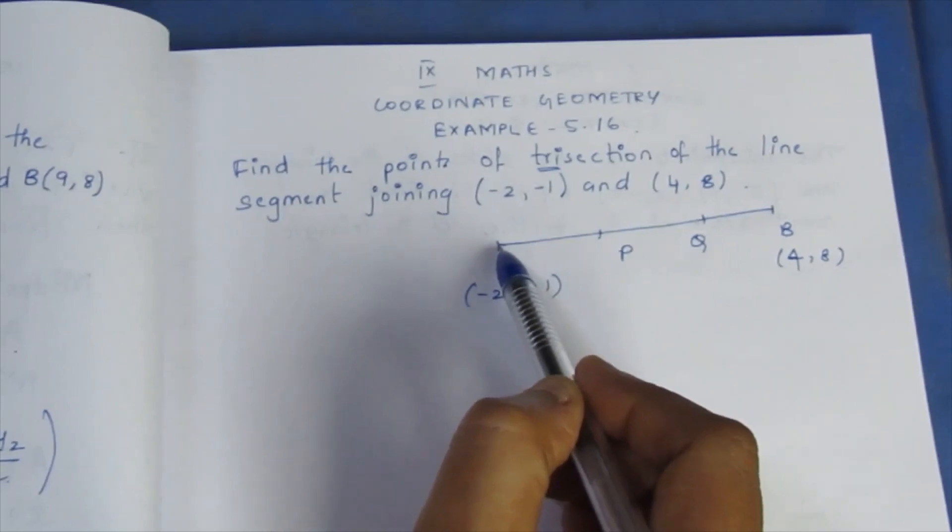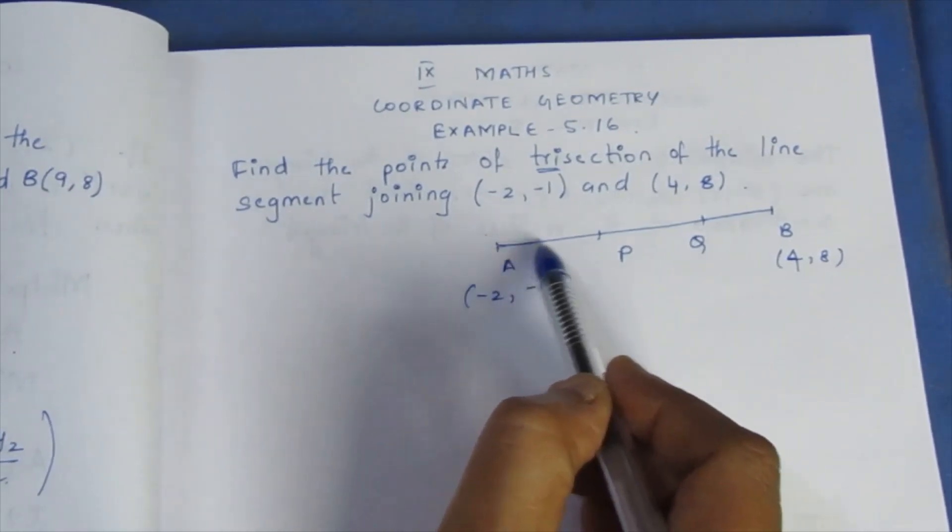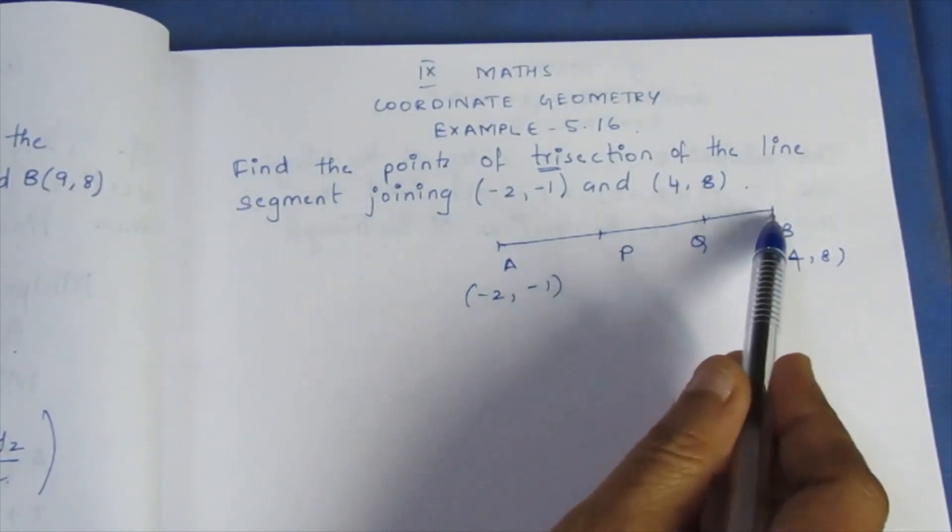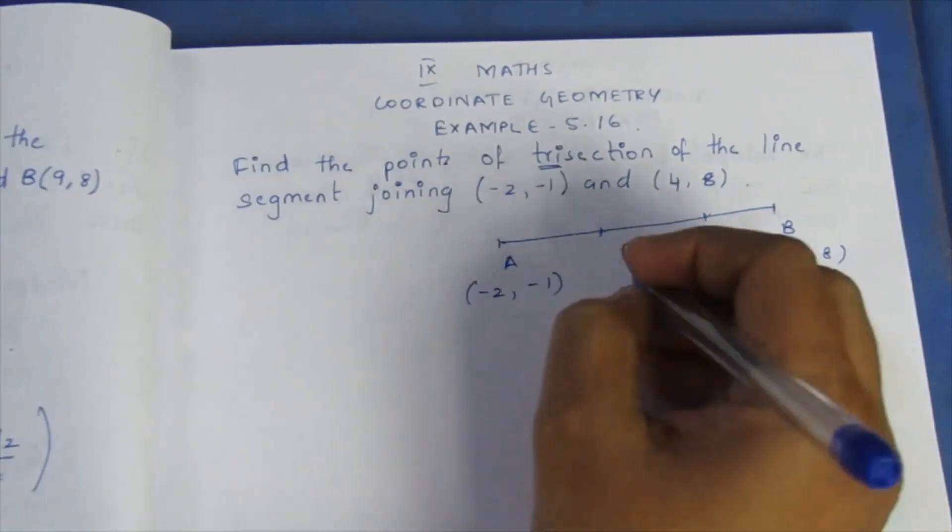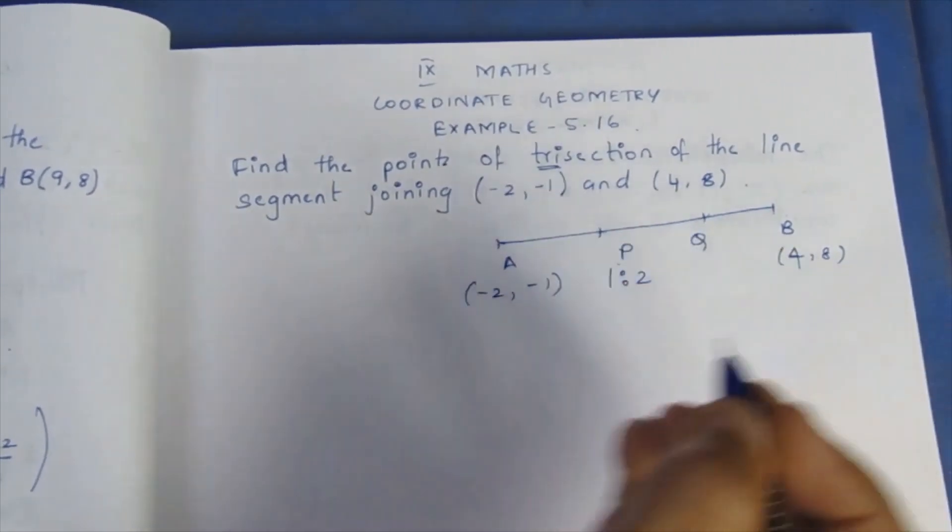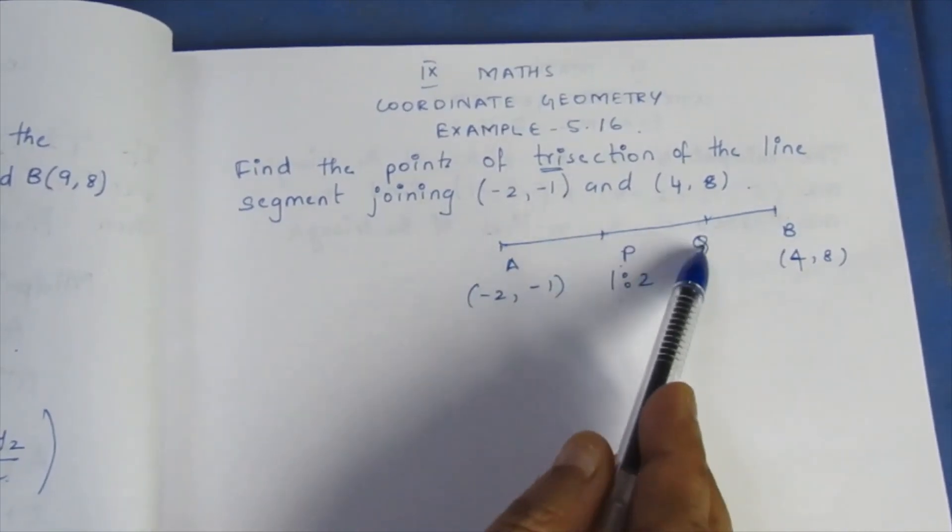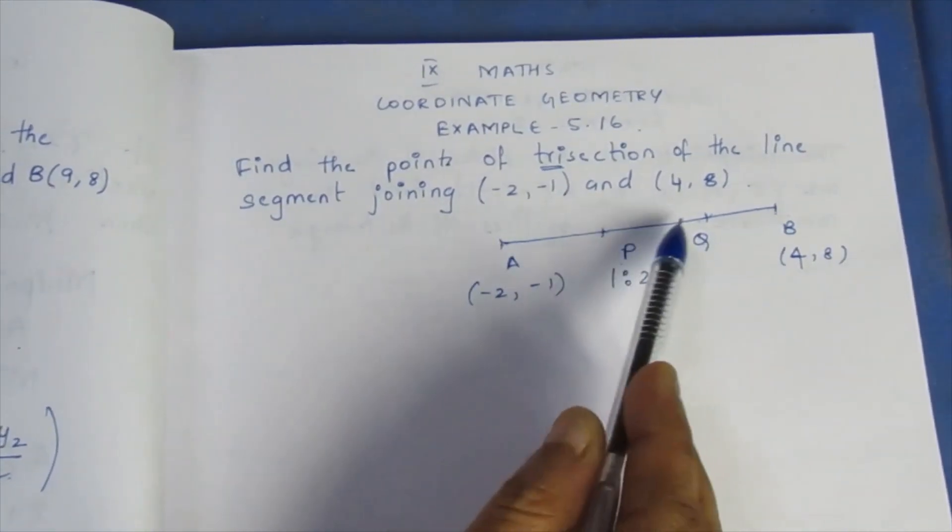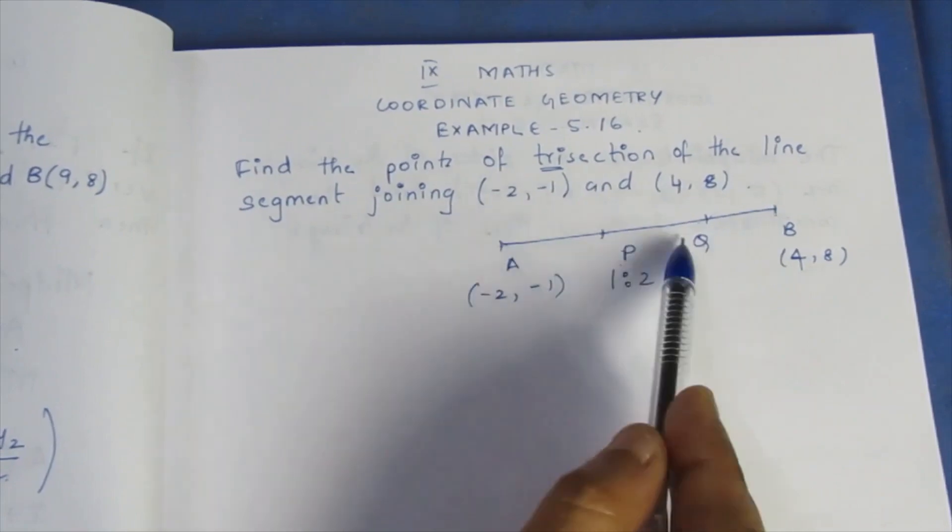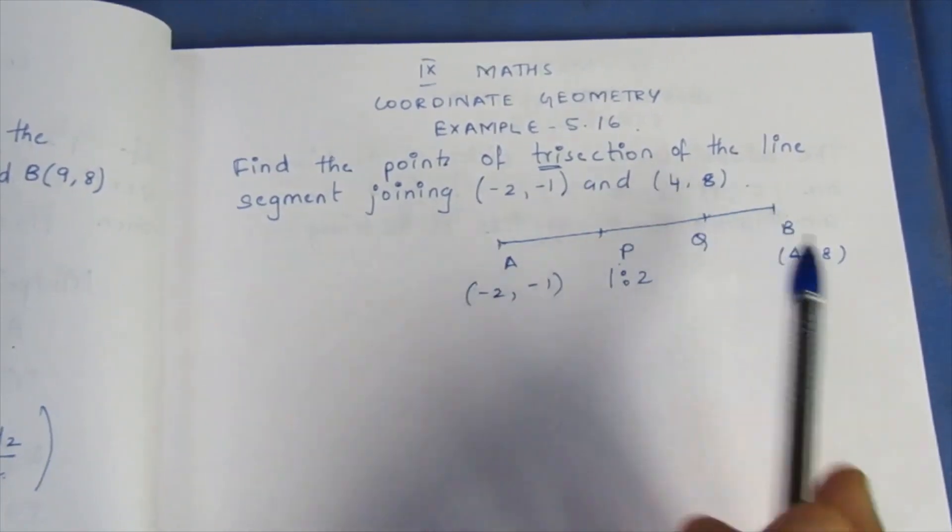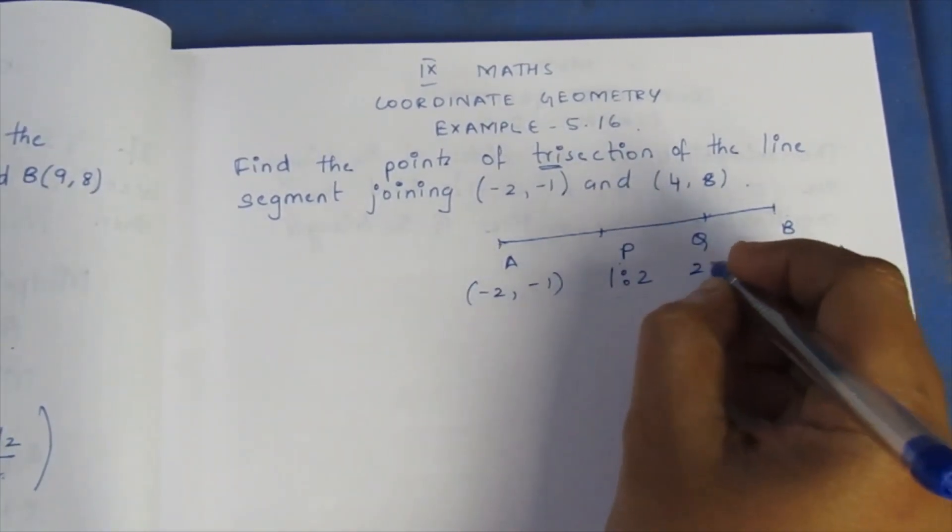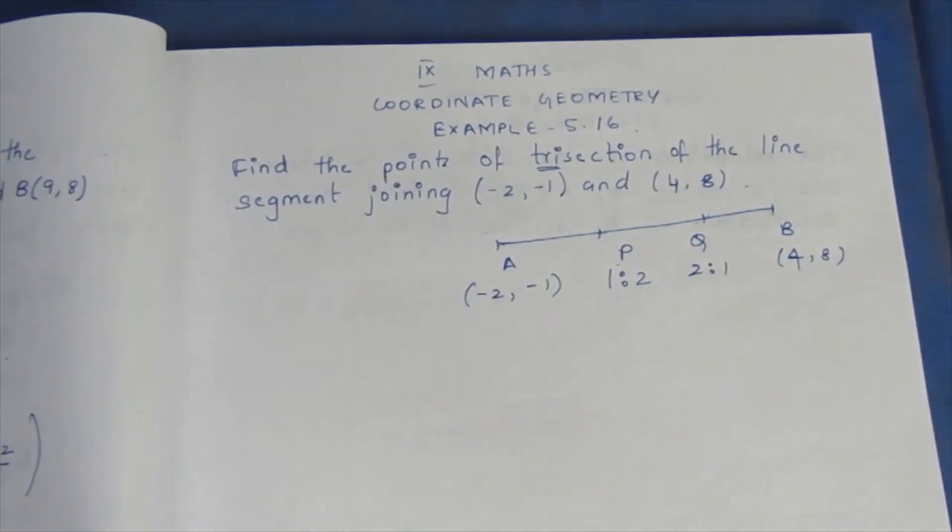We will take the ratio. The ratio is 1 is to 2. As one point, if the ratio is 1:2, then the other point has ratio 2:1.